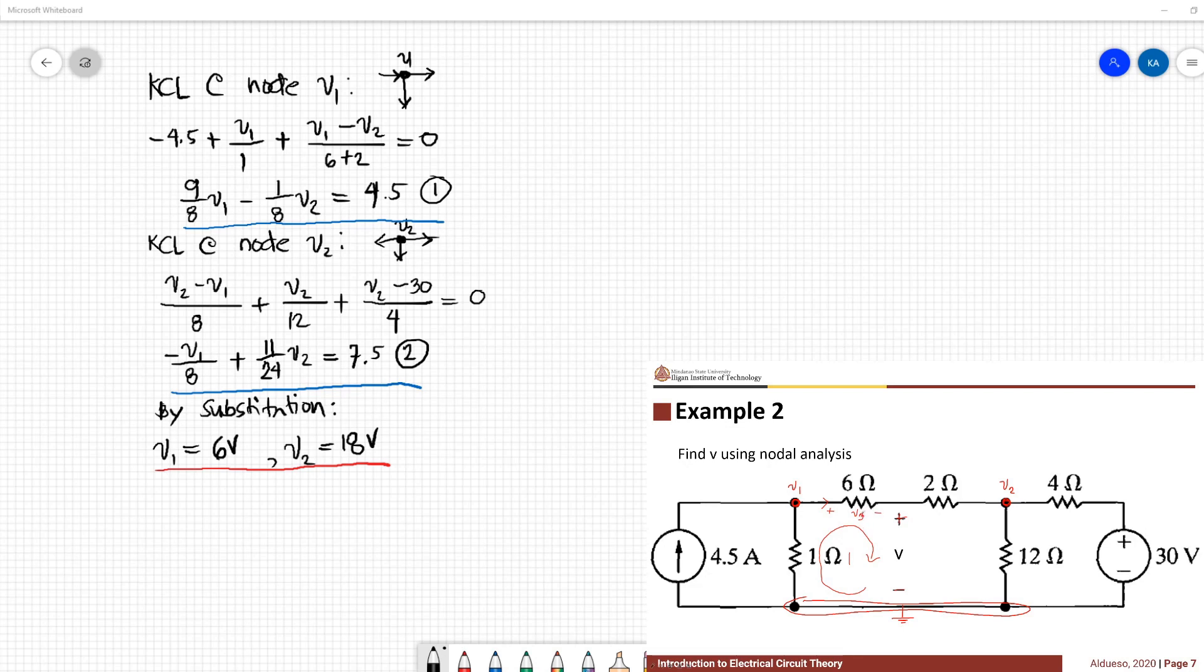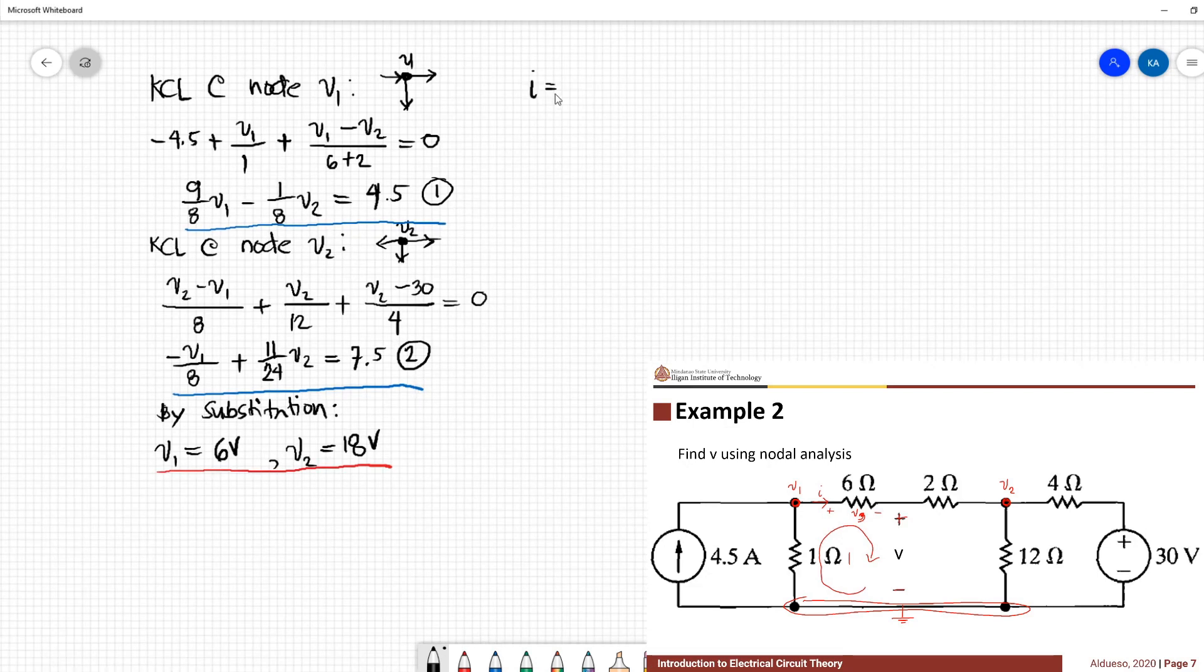Let's label this as V3. Let's label this current here as current I. I is equivalent to V1 minus V2 all over 6 plus 2, is equivalent to negative 1.5 amperes.